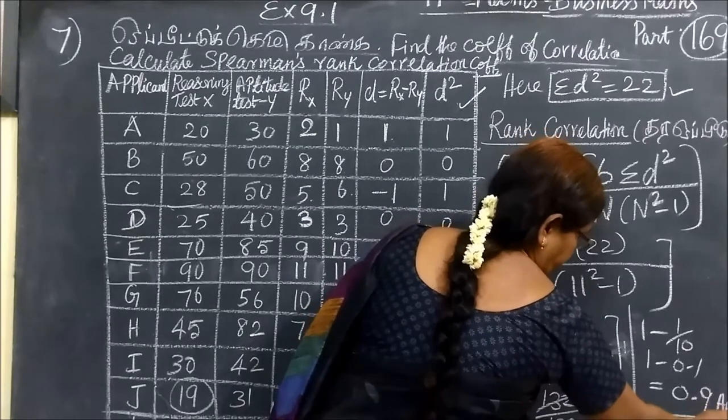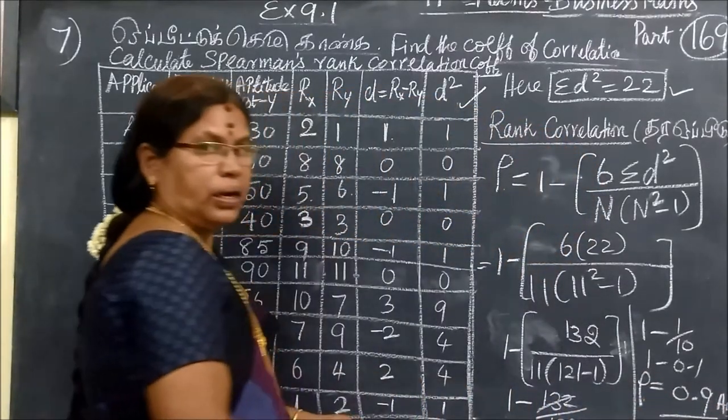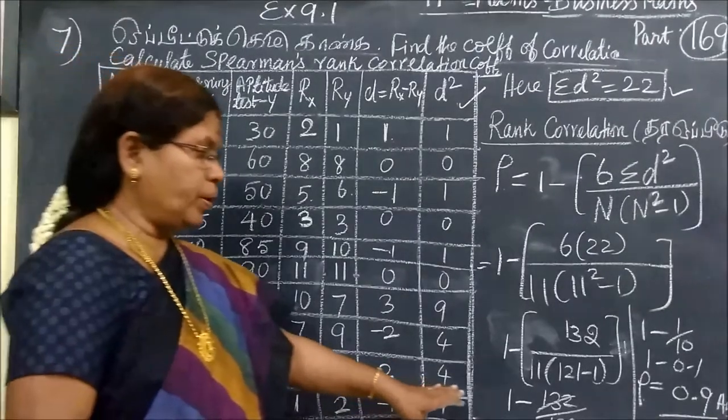So this is the answer. Therefore, rho equal to, rank correlation equal to 0.9.